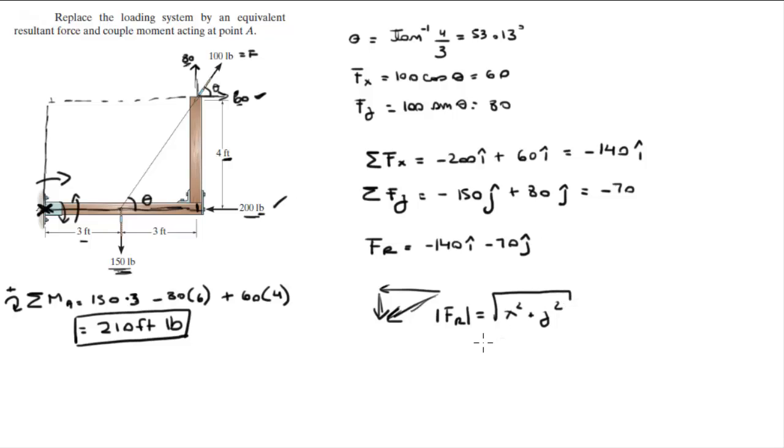So the magnitude comes out to be 157 pounds. And the angle, let's call it beta because we used theta over here, is equal to the tangent inverse of the Y component, which is negative 70, over the X component, which is negative 140, and comes out to be 26.6 degrees. So that will be this angle right here.